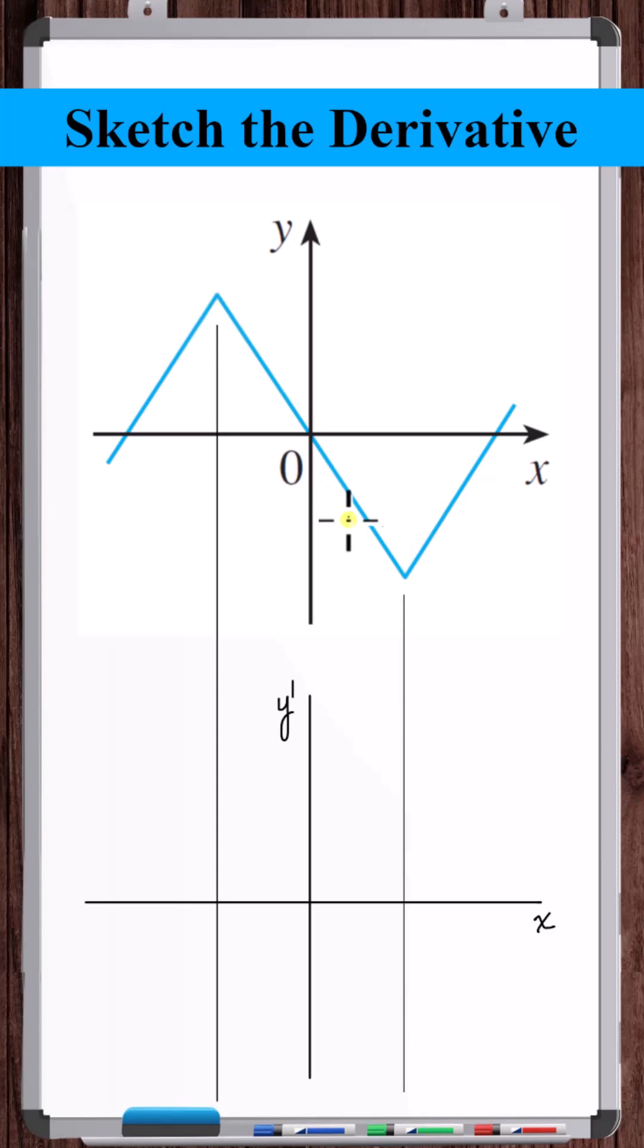At these kinks, the graph isn't smooth, which means that there's going to be a jump in slope when crossing over the kink. All around the kinks, we see that the graph is a line.